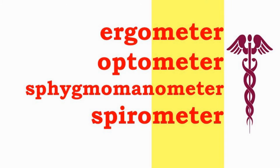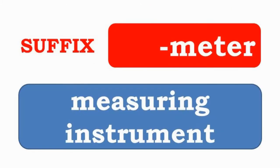Ergometer, optometer, sphygmomanometer, and spirometer have the suffix -meter, which indicates an instrument used to measure or count.